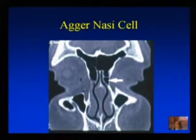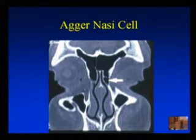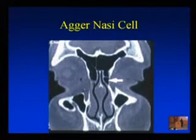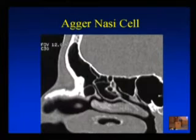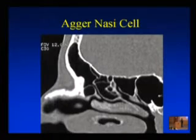The agonese cell is the cell you can see before you can see the middle turbinate — it's the cell anterior to the middle turbinate, and there's only one of them. Agonese cell means hill — a curve or hill anterior to the middle turbinate in the lateral nasal wall. On the parasagittal scan, you can see the agonese cell sitting up against the frontal process of the maxilla, with the frontal sinus draining above it.